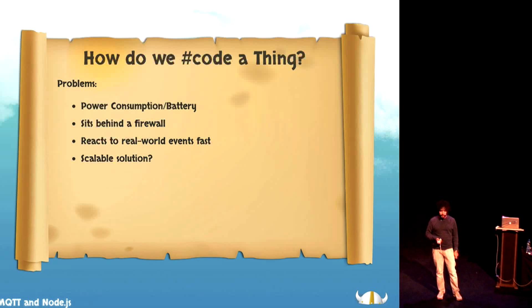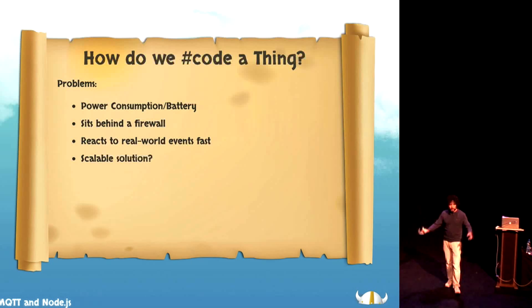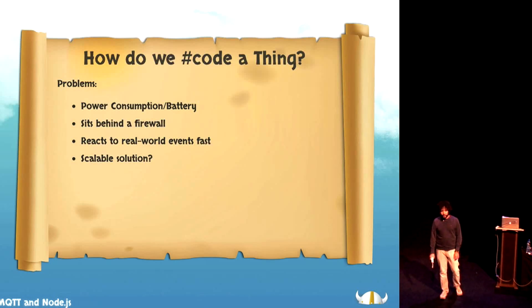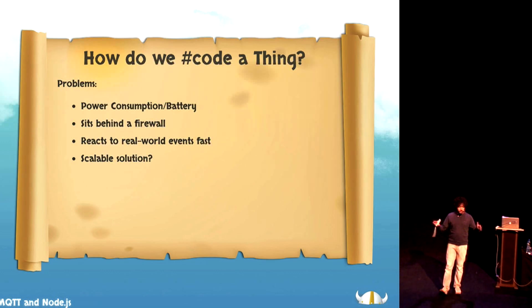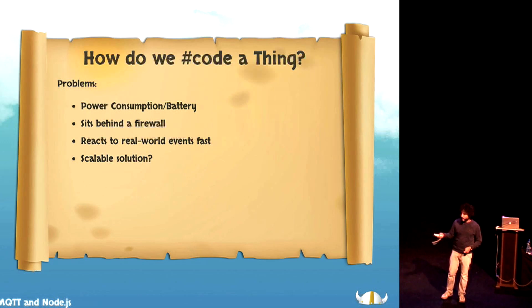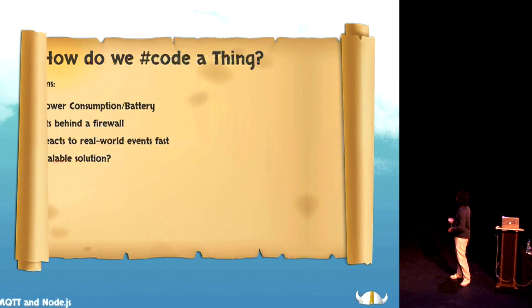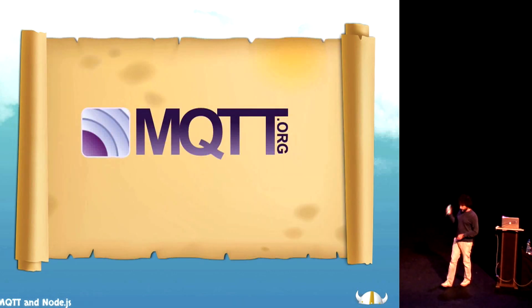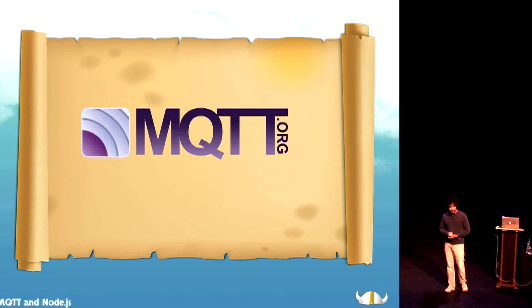We need some kind of scalable solution for this problem, because I've seen the latest prediction about the Internet of Things — it's 80 billion devices connected to the Internet by 2020. How many of you are running a service with 80 billion persistent connections in it? Well, I'm talking about MQTT today, which is a very nice protocol. It's 20 years old.